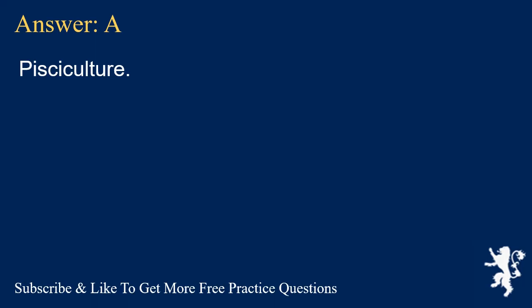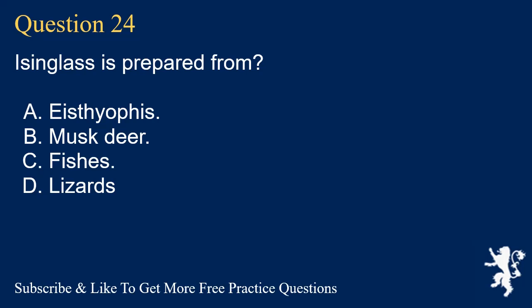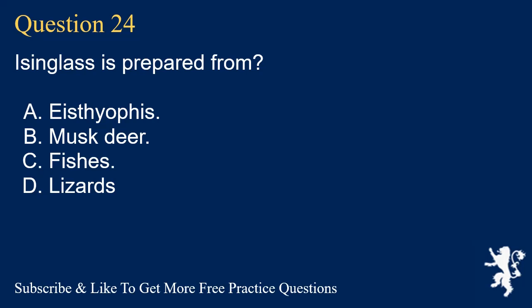Question 24. Isinglass is prepared from? A. Ice-tie office. B. Musk deer. C. Fishes. D. Lizards. Answer: C. Fishes.